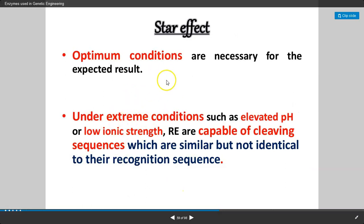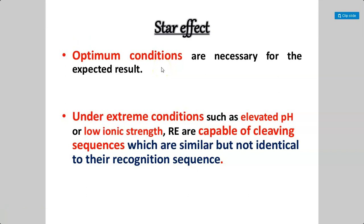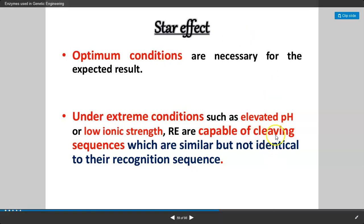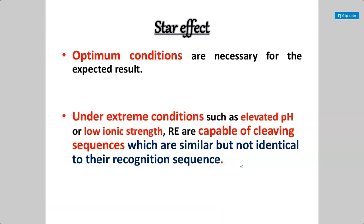The next point is the star effect. Optimum conditions are very necessary for the expected result. When there are extreme conditions — for example, elevated pH or low ionic strength — these restriction enzymes are capable of cleaving sequences that are similar but not identical to their recognition sequences. This is called the star effect.